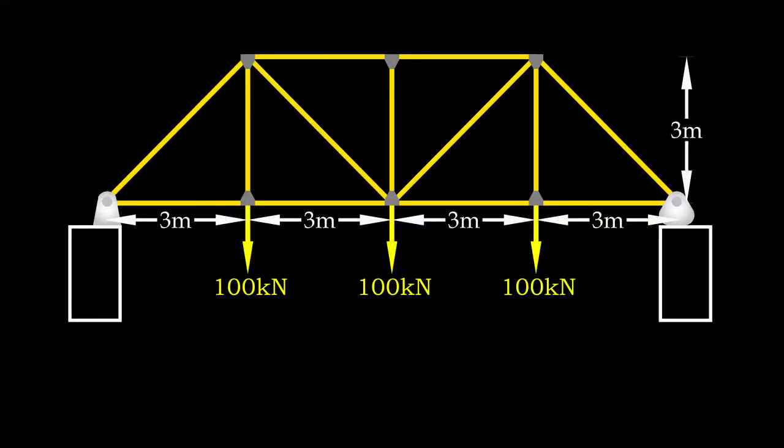Let's say we have a simply supported 4-panel Warren truss bridge. The truss is loaded with 100 kilonewton concentrated load at the bottom chord joints. The truss height and panel length are both 3 meters. Our mission now is to determine the force developed in all members.